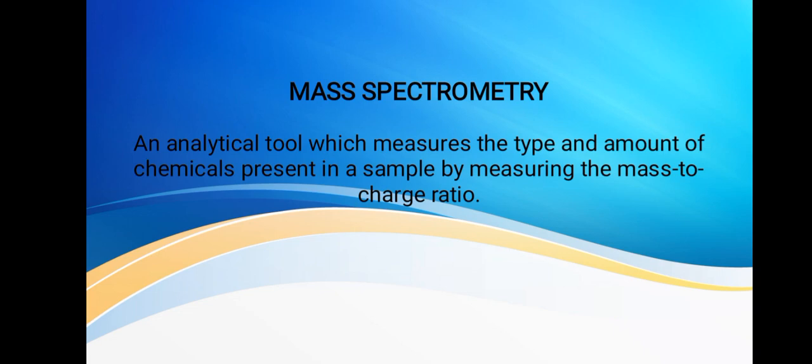Mass spectrometry works because the mass of each ion is different, which allows compounds to be determined based on the masses of the ions that the unknown compound breaks into.